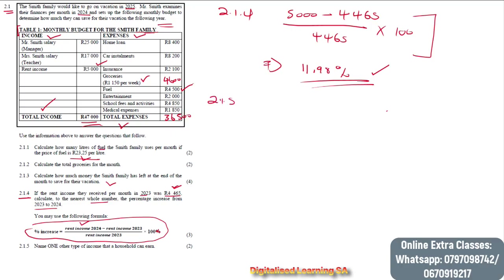Question 2.1.5 says: name one other type of income that a household can earn. Mr. Smith could work overtime, and we know that if he works overtime he will be able to get more money. That brings us to the end of this question. Don't forget to subscribe so that when we post our next videos you will be notified.